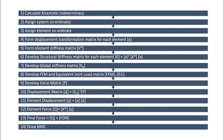The first step is to calculate kinematic indeterminacy, then we will assign system coordinates. The third step is to assign element coordinates for each element of the frame structure. After that, we have to develop a displacement transformation matrix for each element. In the stiffness method, we develop the displacement transformation matrix for the entire structure, but in the direct stiffness method we develop it for each element.